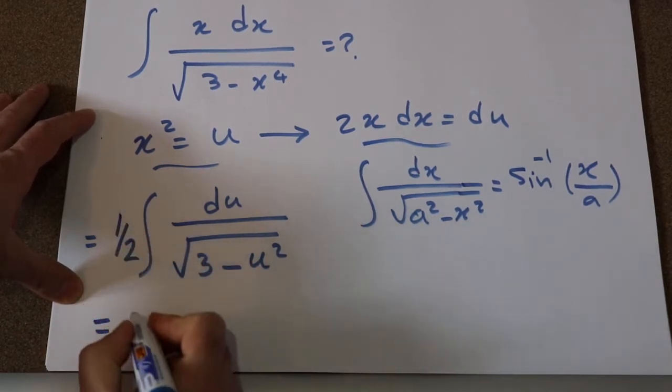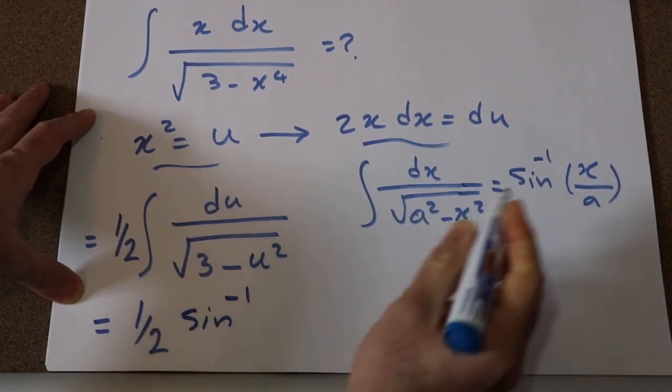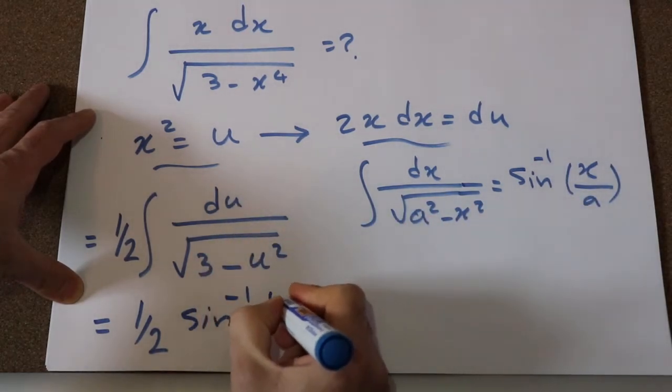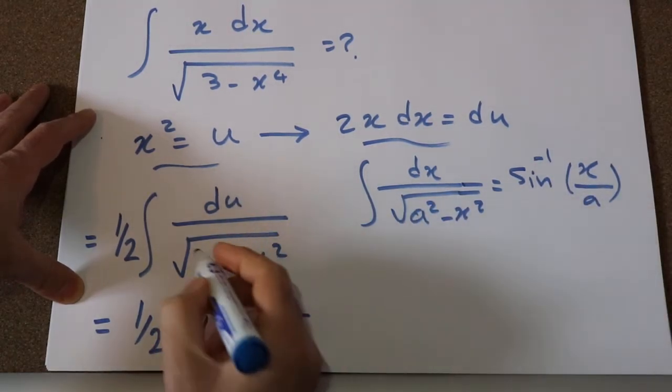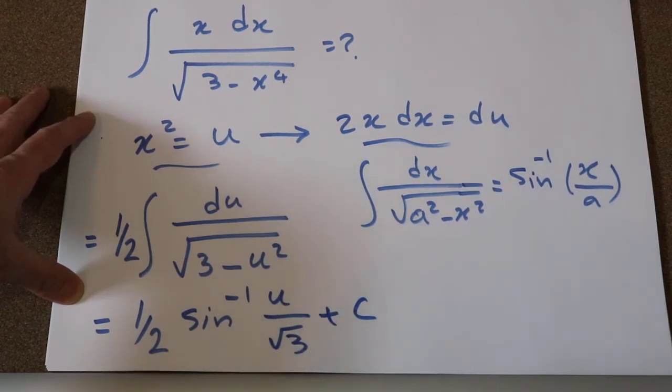this integral will be equal to 1 divided by 2 sine inverse – here is u – divided by a, which is square root of 3, okay, plus C, which is the constant of the integral.